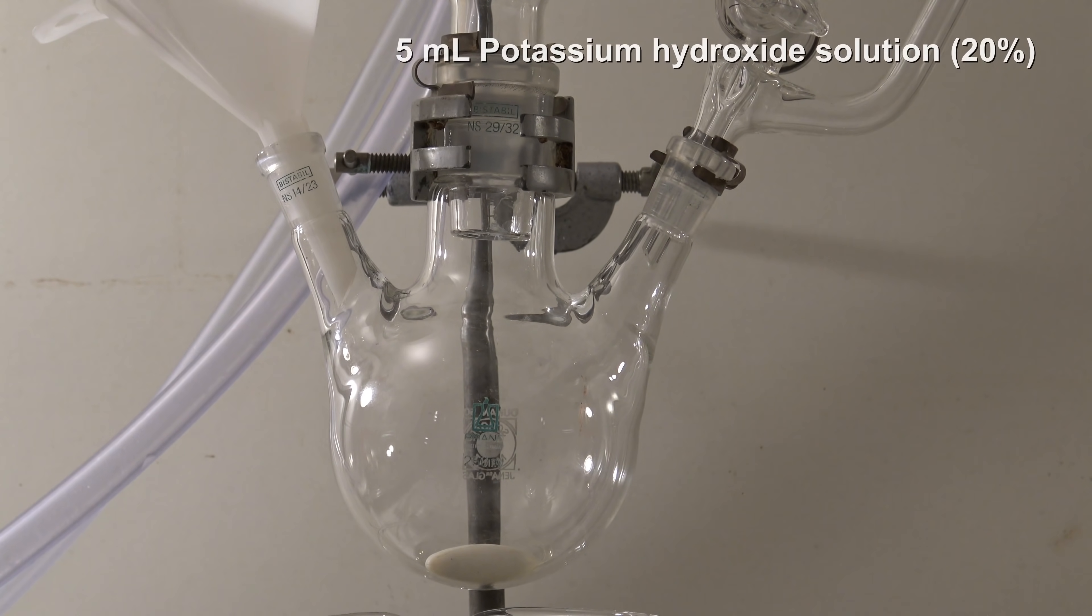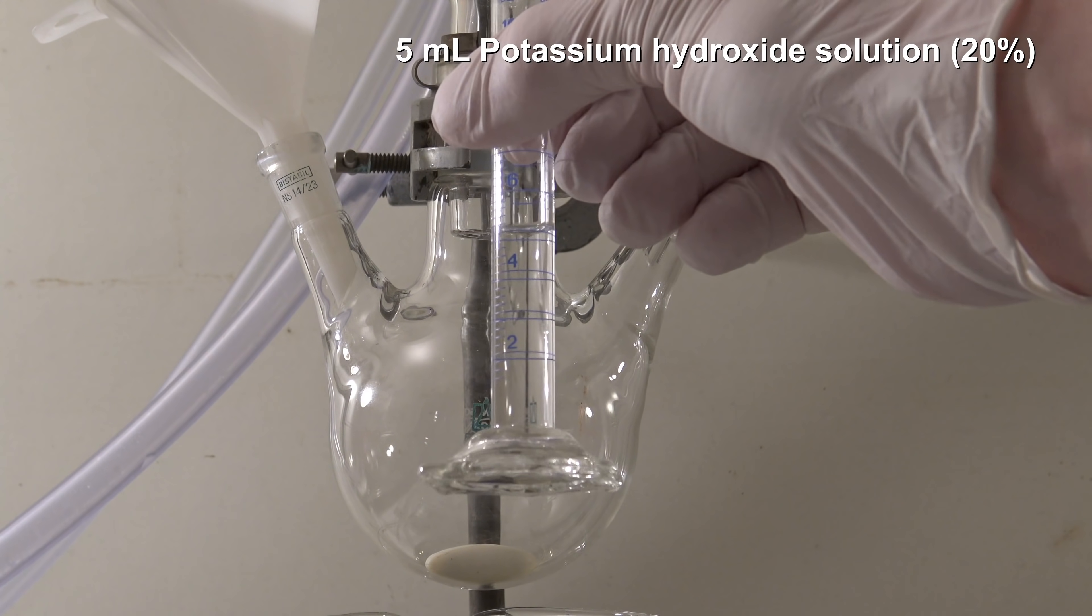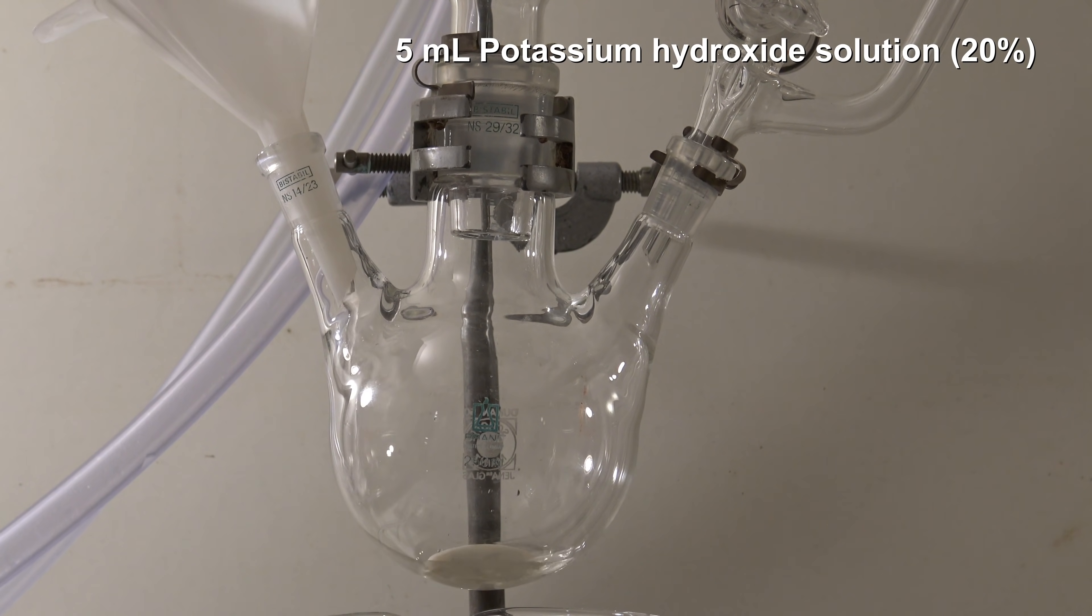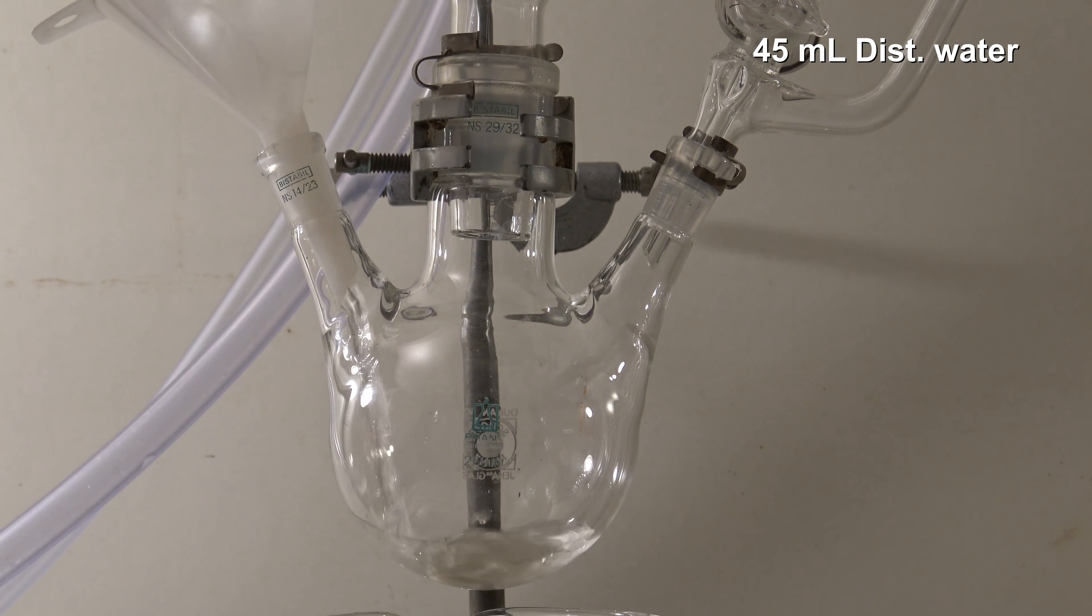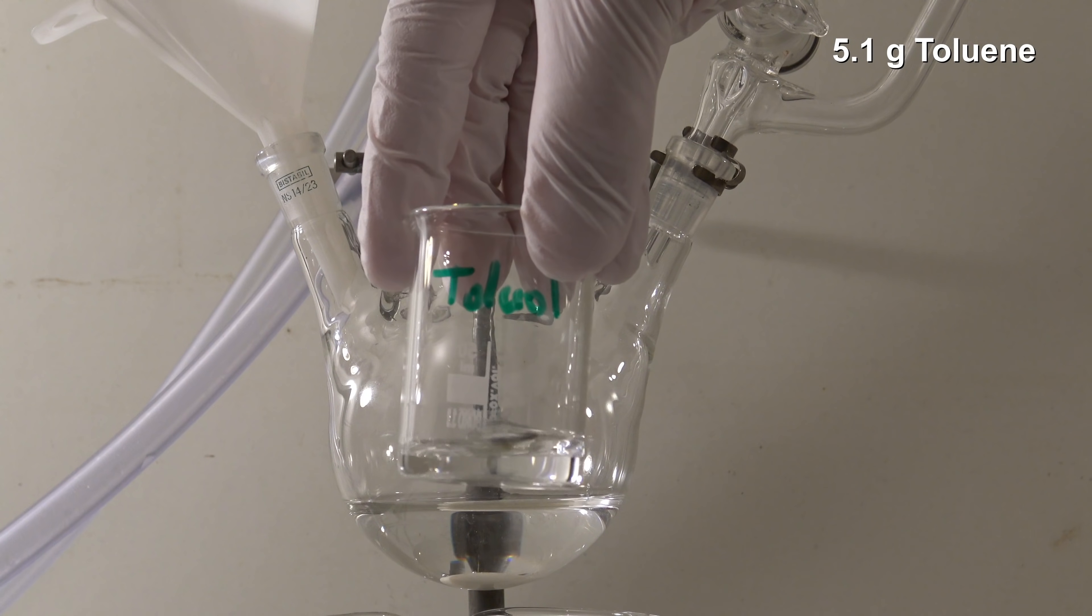At first, five milliliters of 20% potassium hydroxide solution were added to the flask. Then, 45 milliliters of distilled water were added, and 5.1 grams of toluene.